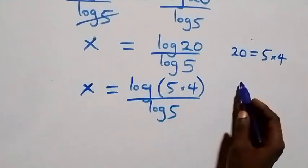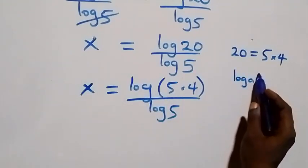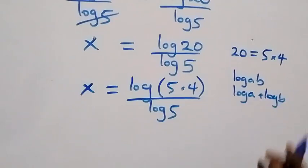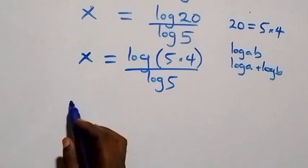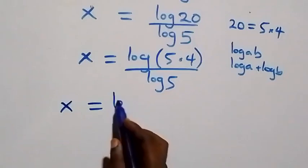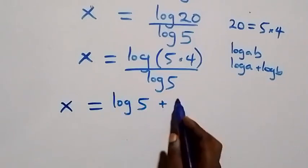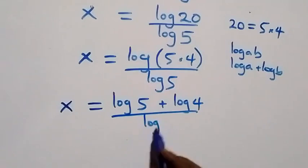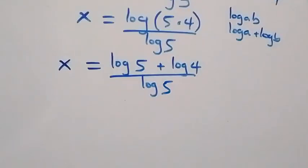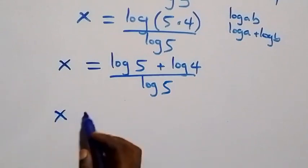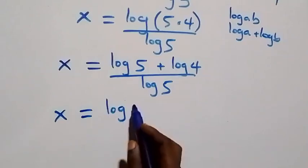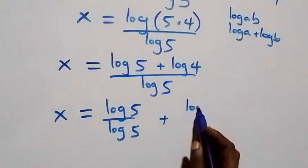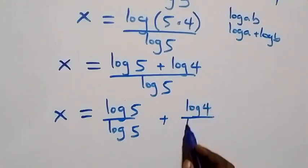This follows the logarithm product rule: log(a times b) equals log a plus log b. So we can write this as x equals (log 5 plus log 4) over log 5. Then we separate this into two fractions: x equals log 5 over log 5, plus log 4 over log 5.